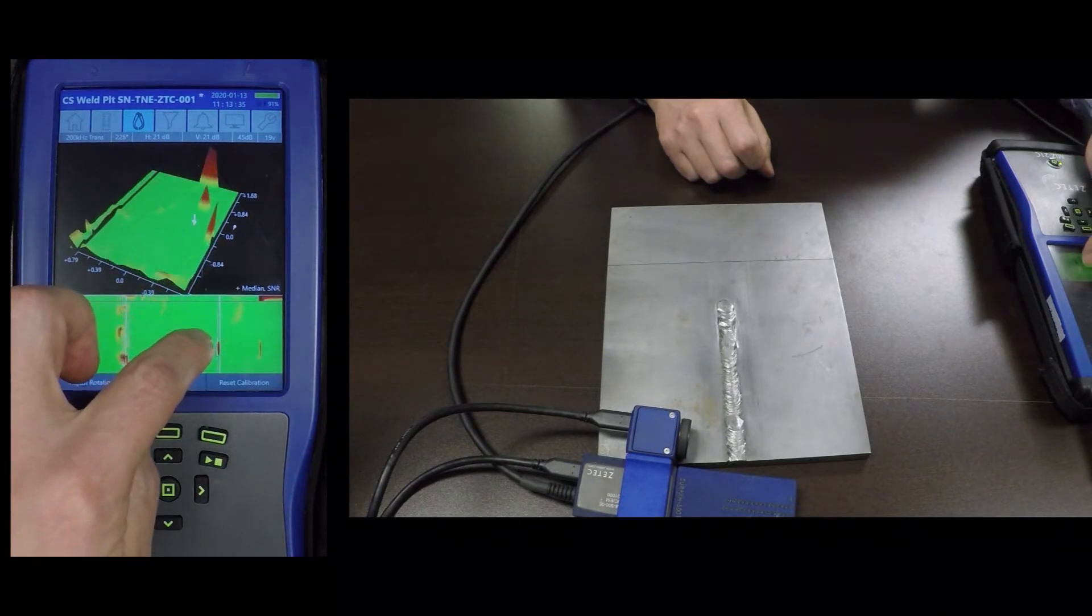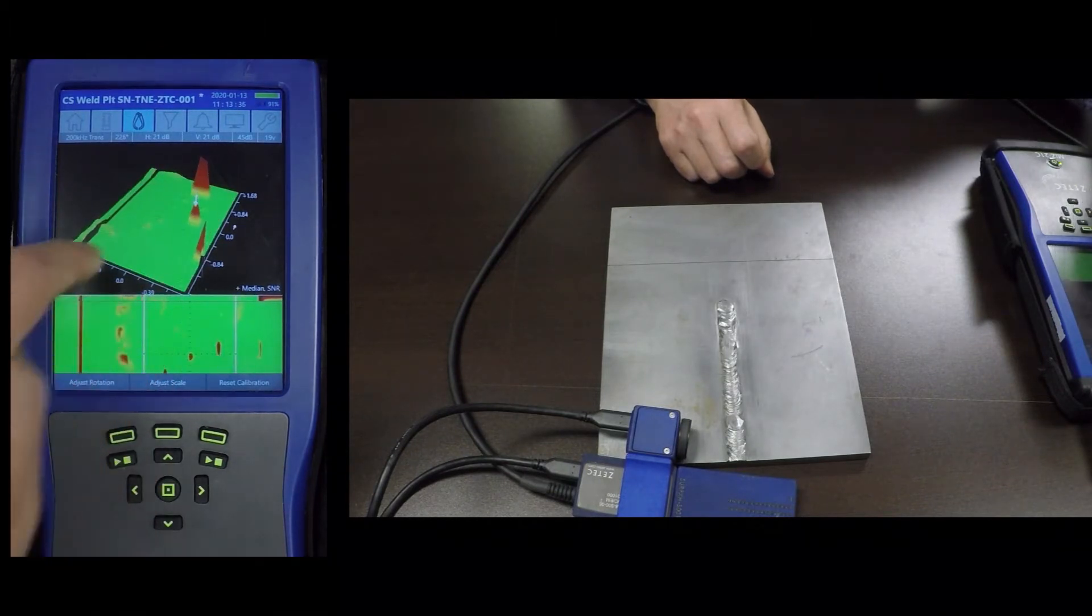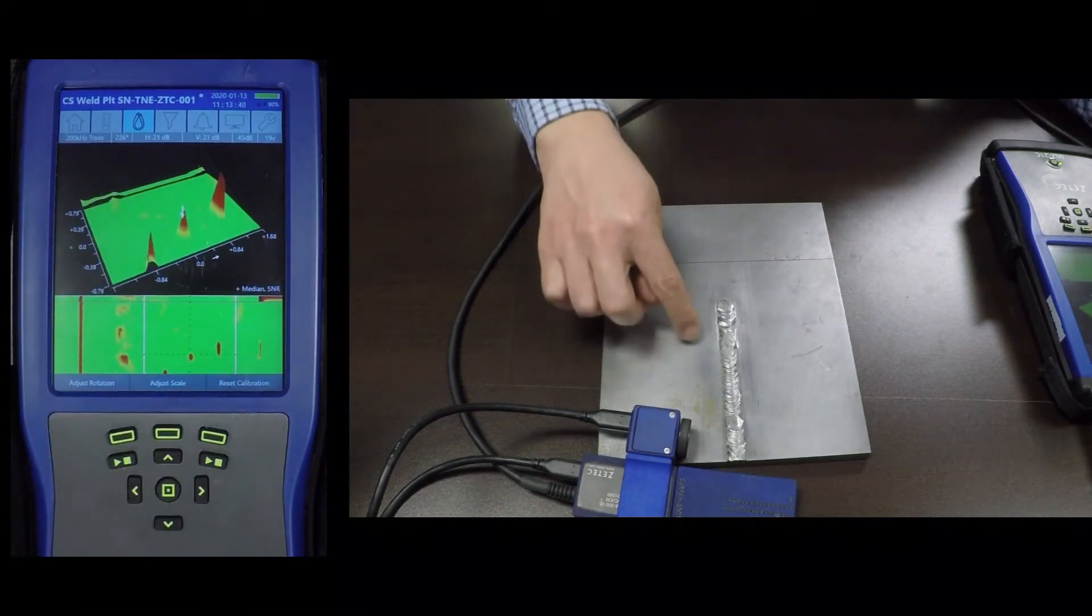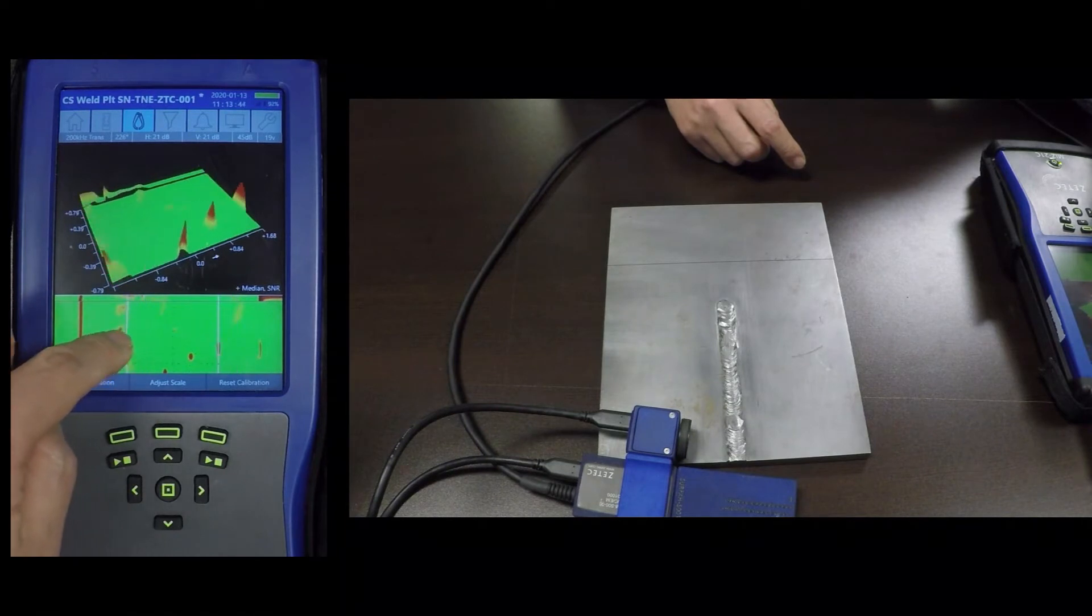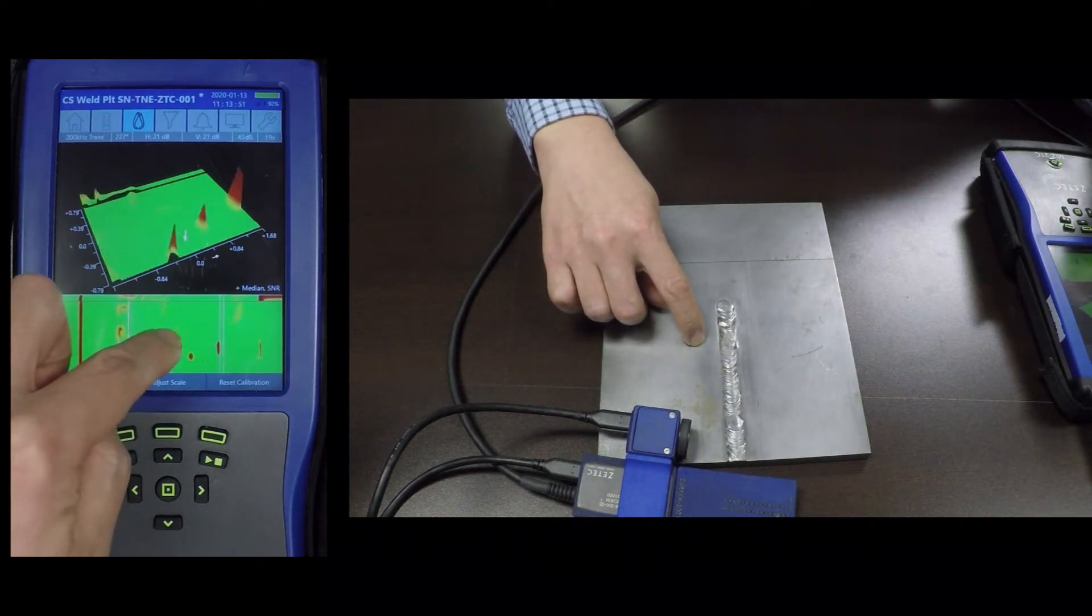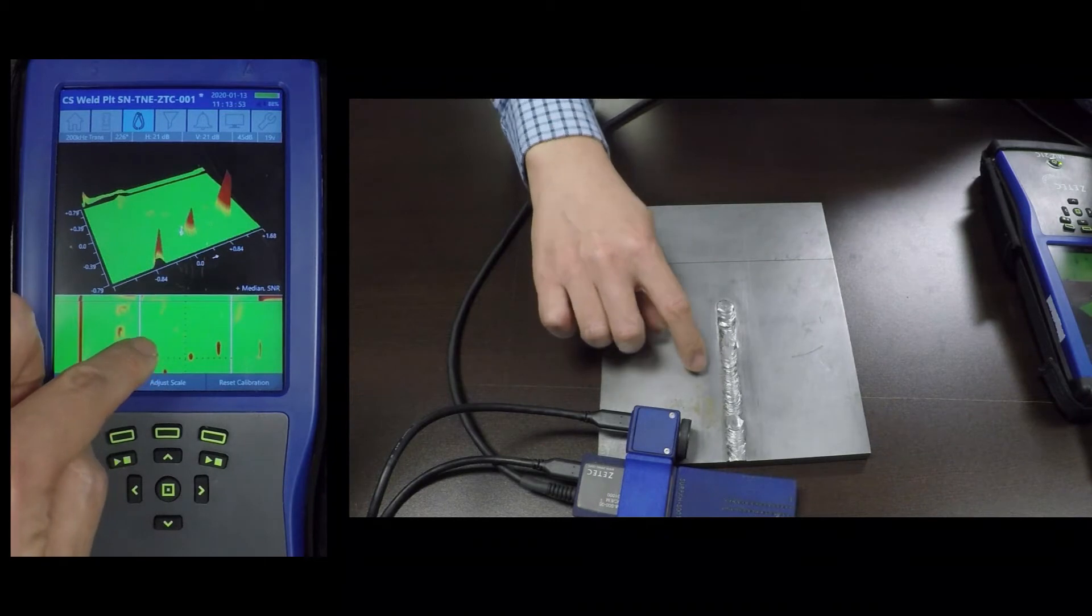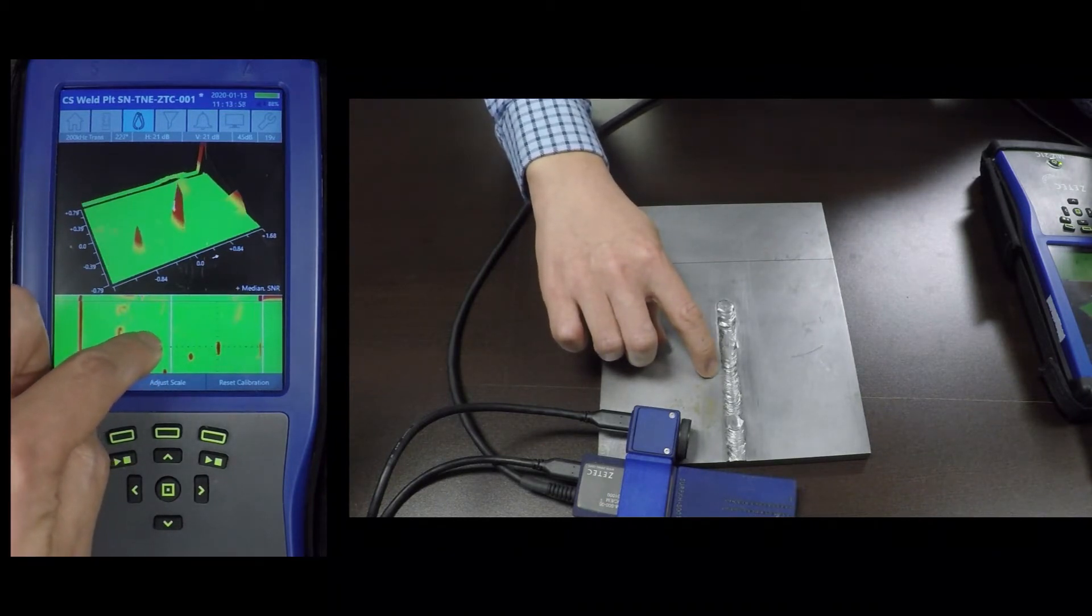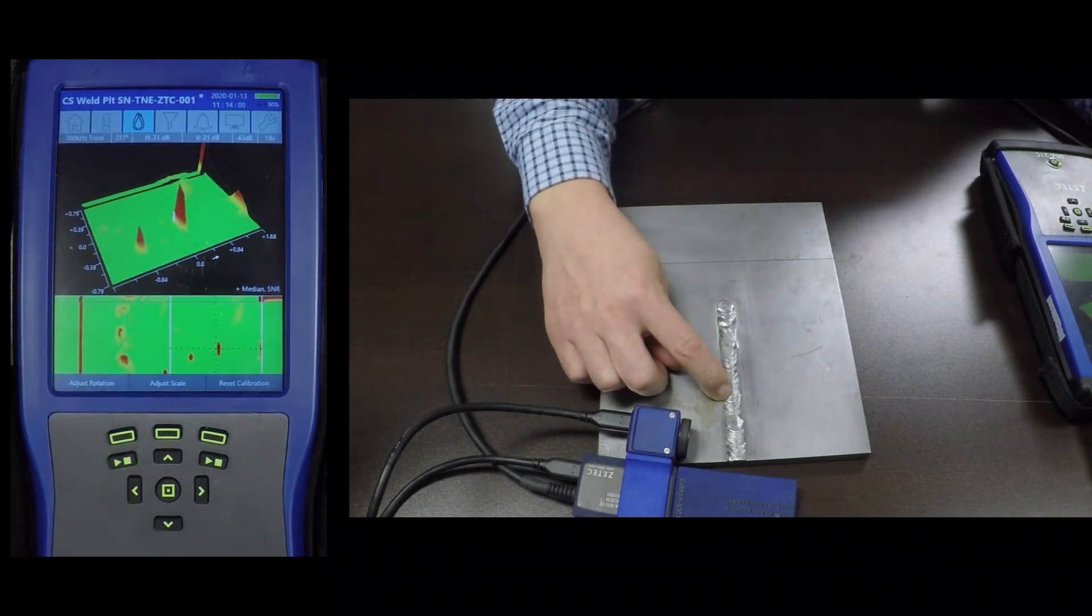And then you can see the three transverse notches. So this one right here, this one would be the one in the heat affected zone. And then this one here is the one in the toe area. And then this one is the one right on the crown.